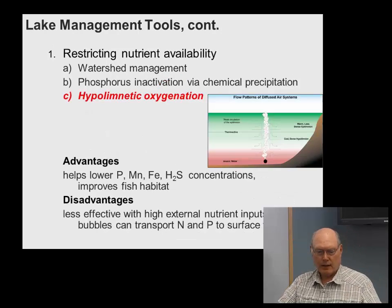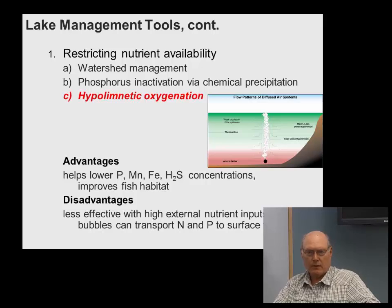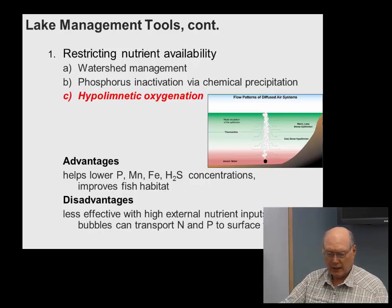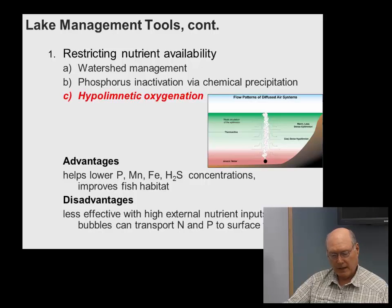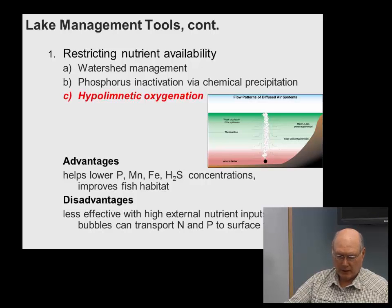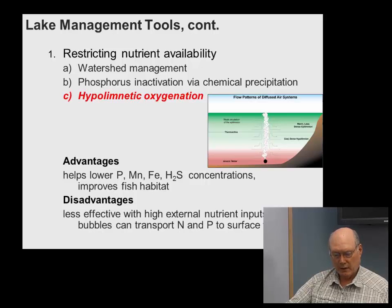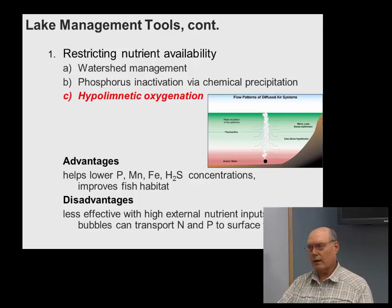A third approach is hypolimnetic oxygenation — oxygenating the bottom sediments. This helps lower phosphorus and other metals like manganese and iron, and improves fish habitat. The disadvantage is that with high external nutrient inputs, rising bubbles can transport nitrogen and phosphorus to the surface water, so while improving overall water quality you can also inadvertently release more nutrients upward.